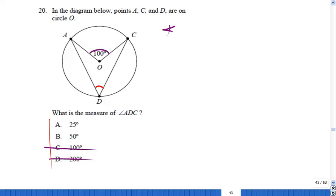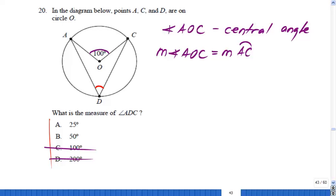Angle AOC - angle AOC is what kind of angle? Central angle, right? For a central angle, we know that the measure of angle AOC is always equal to the measure of the intercepted arc, which in this case is arc AC. That's the arc I'm talking about. So my angle AOC has that measure, which is what in this case? 100 degrees. That's for central angles.